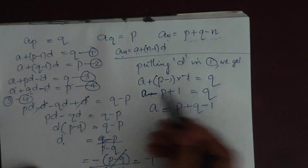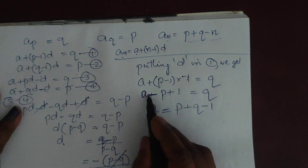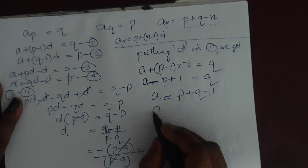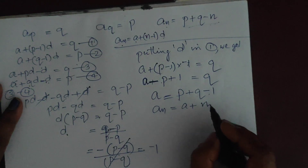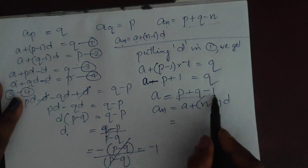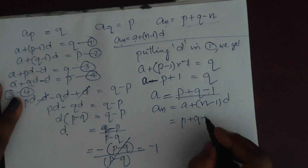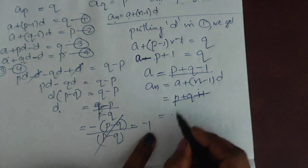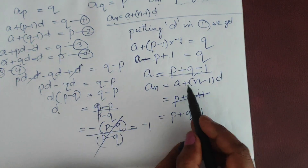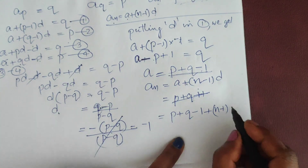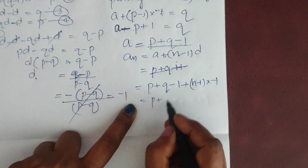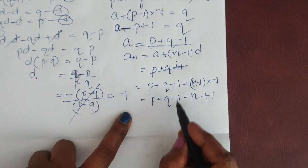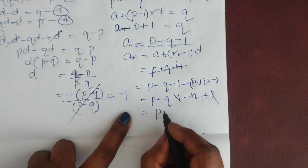Now write the nth term: an = a + (n - 1)d = (p + q - 1) + (n - 1)×(-1). That is p + q - 1 - n + 1. The -1 and +1 cancel, leaving p + q - n. This completes the proof.